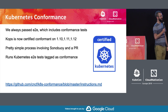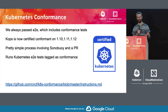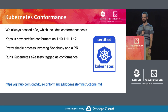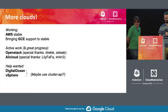We are also conformant. We never really put it on the repo because technically the conformance tests are part of the end-to-end suite within Kubernetes, but we now are actually conformant in the repo and have the badge. We are tested against 1.10, 1.11, and 1.12, and we've always been conformant based on our tests. Now we're on the list and can use the Kubernetes trademark.